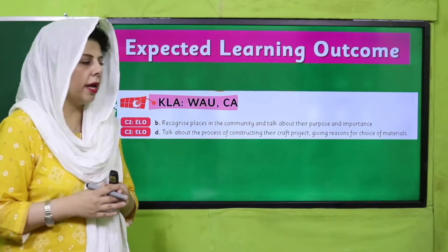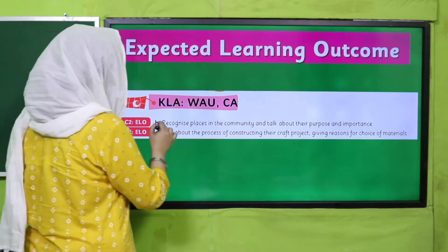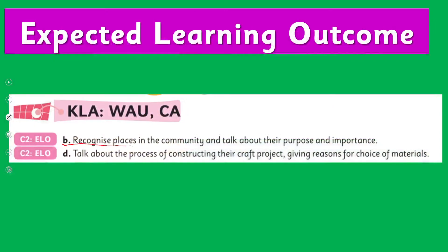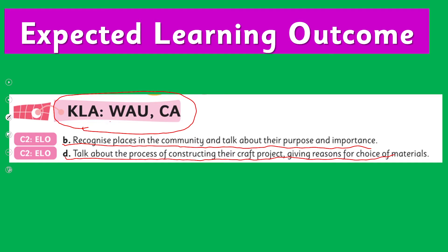Aaj ka hamara expected learning outcome hai: recognize places in the community and talk about their purpose and importance. Talk about the process of constructing their craft project giving reasons for choice of material. Key learning area: World Around Us and Creative Arts. Aaj hum recognition ki koshish karenge kuch jagaon ke baare mein jo hamaari community mein bhi hain.